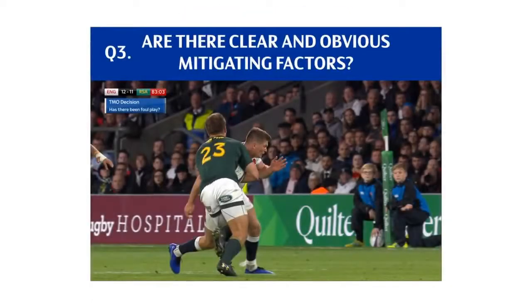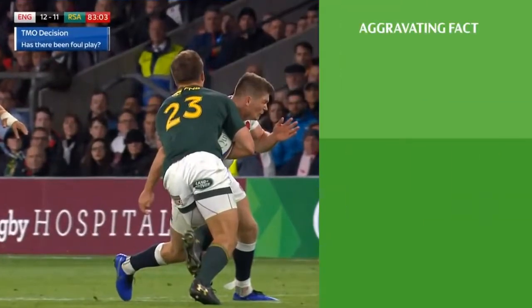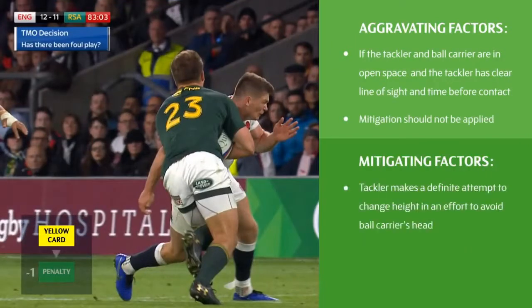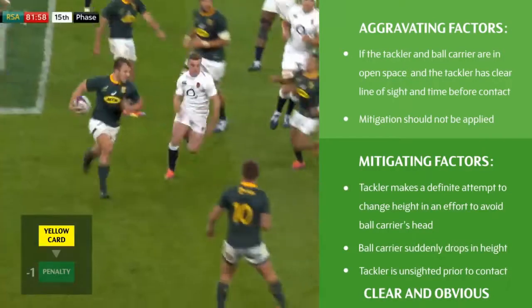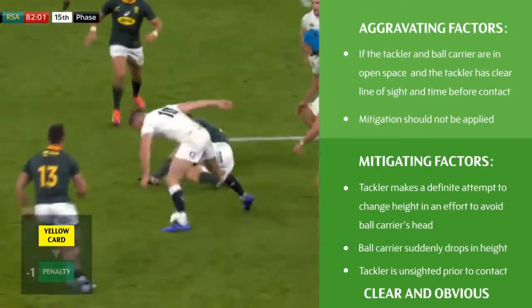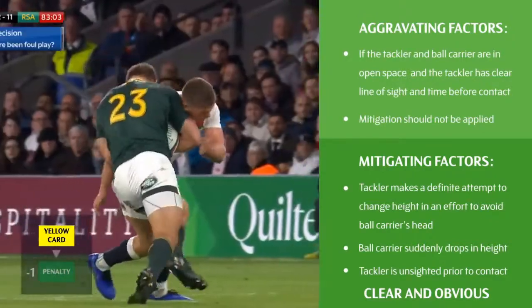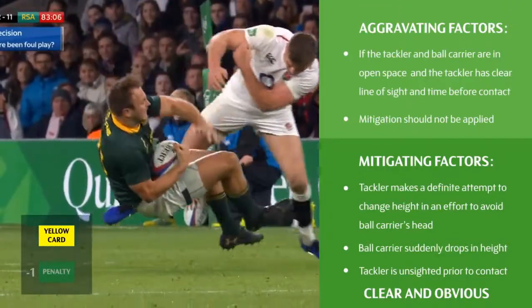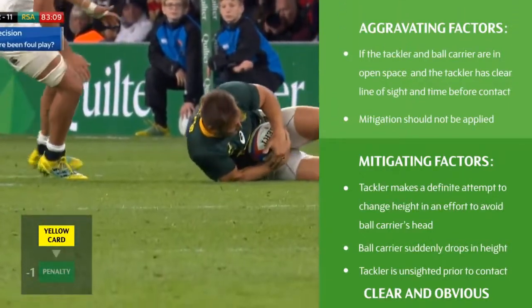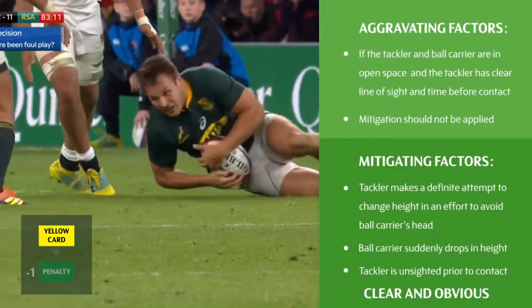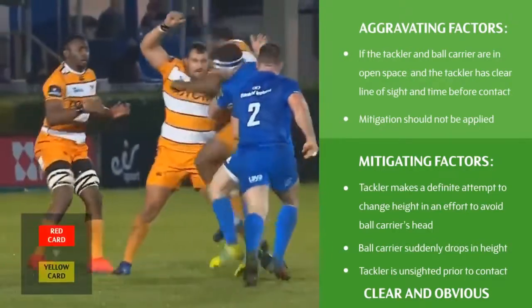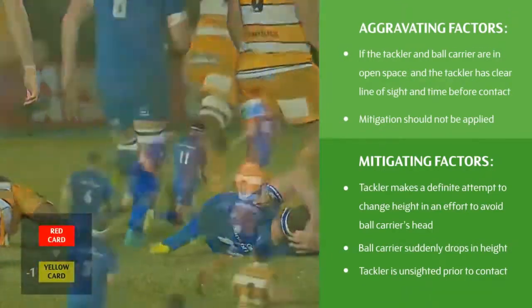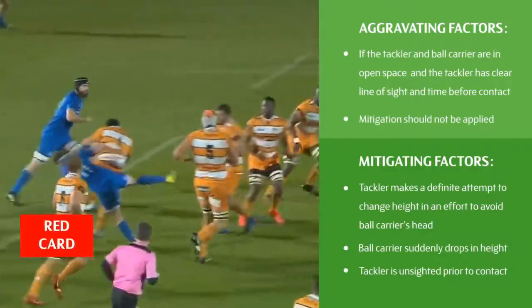Once an initial decision has been made, the match officials must ask whether there are any aggravating or mitigating factors. The following possible factors may be present, but they must be clear and obvious in order for the sanction to be reduced. In this example, both players are in space and the tackler has a clear line of sight prior to the tackle, so aggravating factors are present. There are no clear and obvious mitigating factors, therefore the final decision remains a yellow card. In another example, with no clear and obvious mitigating factors, the final decision remains a red card.